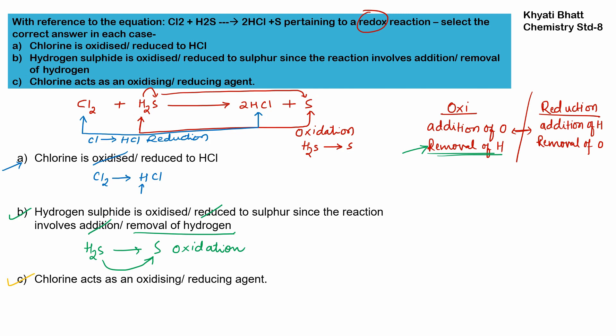Now, does chlorine act as an oxidizing or reducing agent? Chlorine is being reduced — it gains hydrogen to become HCl. But in doing so, it helps sulfur lose its hydrogen, thereby facilitating the oxidation of H₂S. Because chlorine is helping in oxidation, it acts as the oxidizing agent. The hydrogen removed from H₂S goes to chlorine: H₂S becomes S, and Cl₂ becomes HCl. So chlorine is the oxidizing agent.